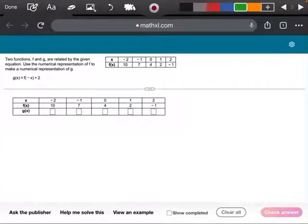All right, so y'all, this is number 6 out of the homework for 2.7, so let me write that up here. This is number 6 from 2.7, and it says two functions f and g are related by a given equation.